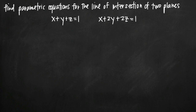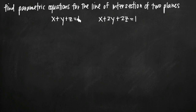Today we're going to be talking about how to find parametric equations for the line of intersection of two planes. In this particular problem, we've been given the equations of two planes: one is x plus y plus z equals 1, and the other plane is x plus 2y plus 2z equals 1. These planes intersect one another, and when they come together, the intersection forms a line. What we want to do is find parametric equations that define that line.